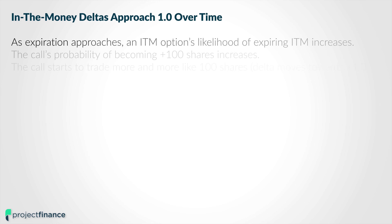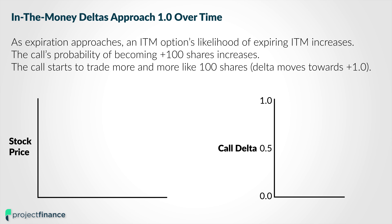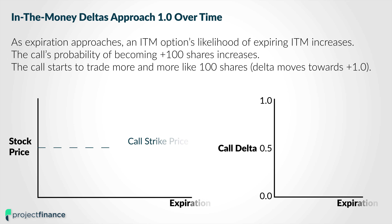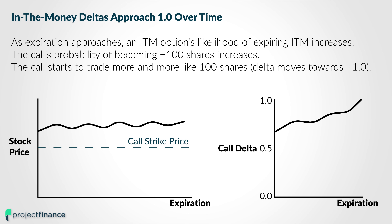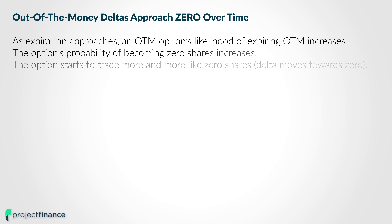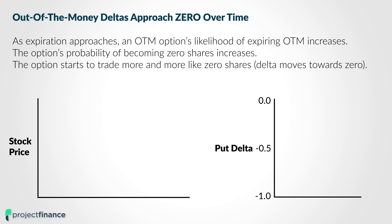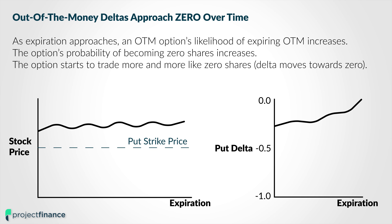So if an option is getting very close to expiration and has pretty much a 100% chance of expiring in the money and becoming 100 shares of stock, then the option is going to start trading like 100 shares of stock — represented by a delta close to positive 1.0 for calls and negative 1.0 for puts. If we're looking at out-of-the-money options, as expiration gets closer and the option is still out of the money, it becomes very unlikely to expire in the money. If it expires out of the money, it expires worthless — it becomes 0 shares of stock — and therefore it will start to trade like 0 shares of stock, not being very sensitive to changes in the stock price, represented by a delta very close to 0.